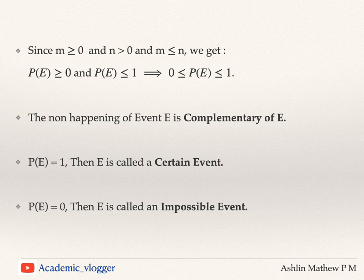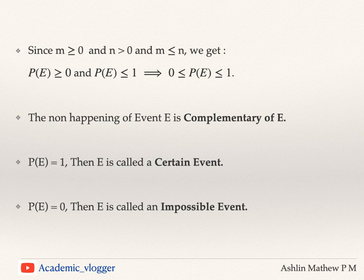We have discussed the happening of an event E. The non-happening of event E is said to be the complement of event E. The probability of the complement of E can be denoted by q, or equivalently as 1 minus p. Since the total probability of all events is 1, if E happens with probability p, then the probability of non-happening of event E is 1 minus p.